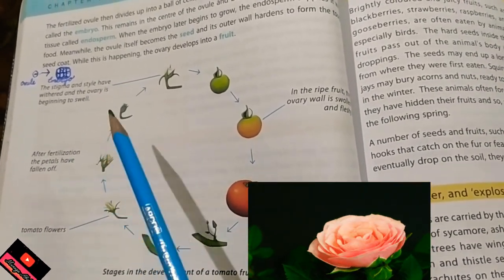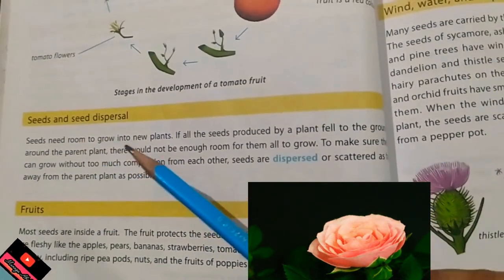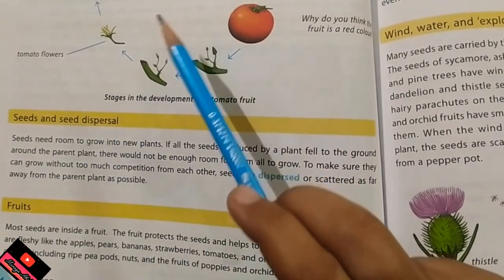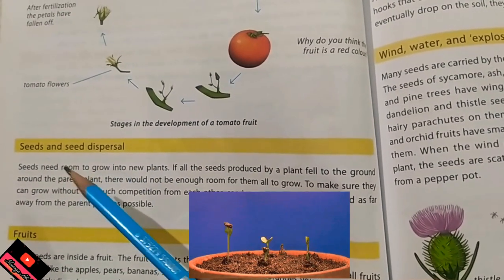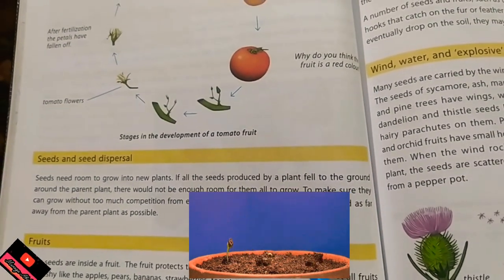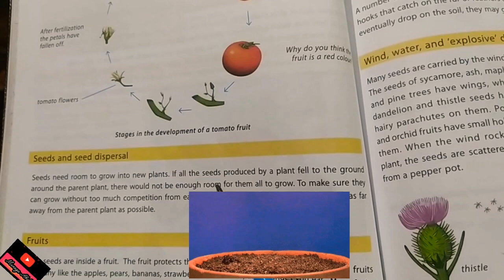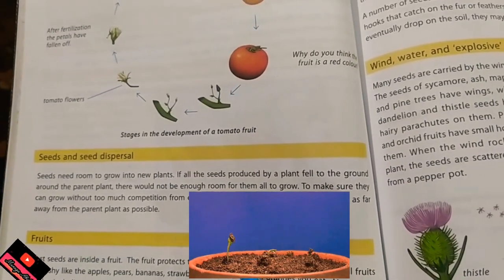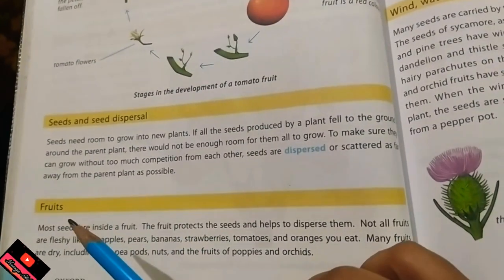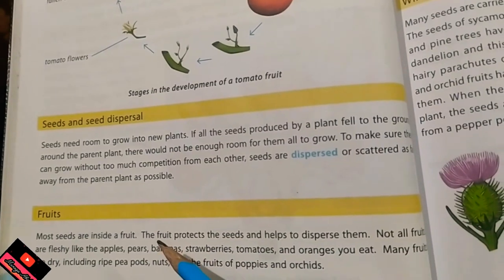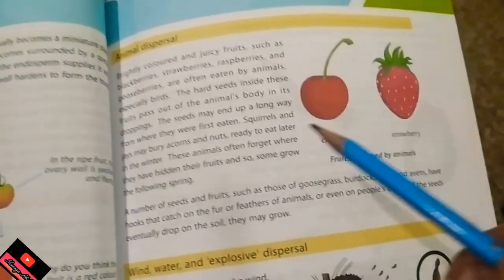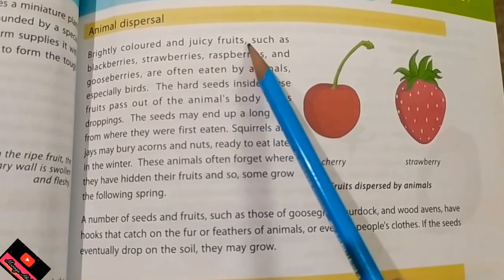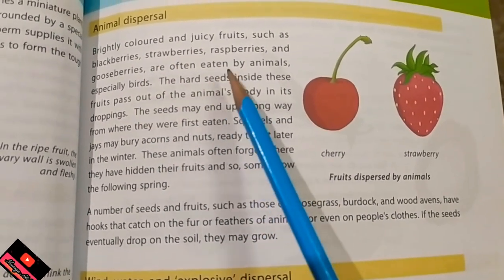Now we will study what a seed is and how seed dispersal occurs. A seed is the fertilized ovule that has developed into an embryo. Seeds need room to grow — if all seeds fell on the ground around the parent plant there would not be enough space. So they must be dispersed. After the formation of fruit, seeds are spread because most fruits are eaten by animals. We also love fruits!